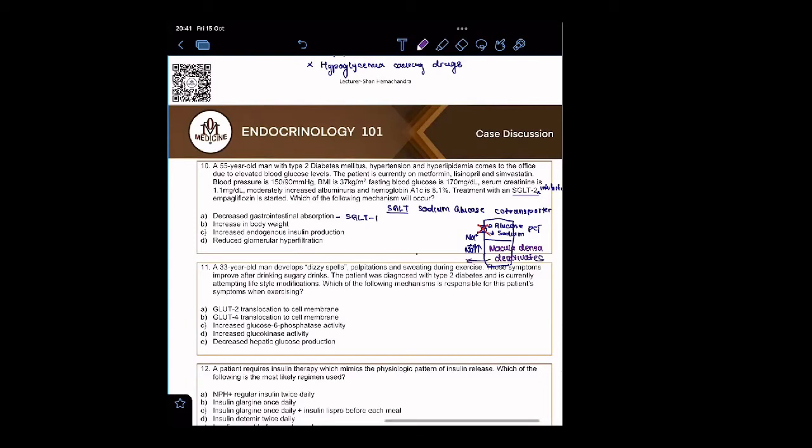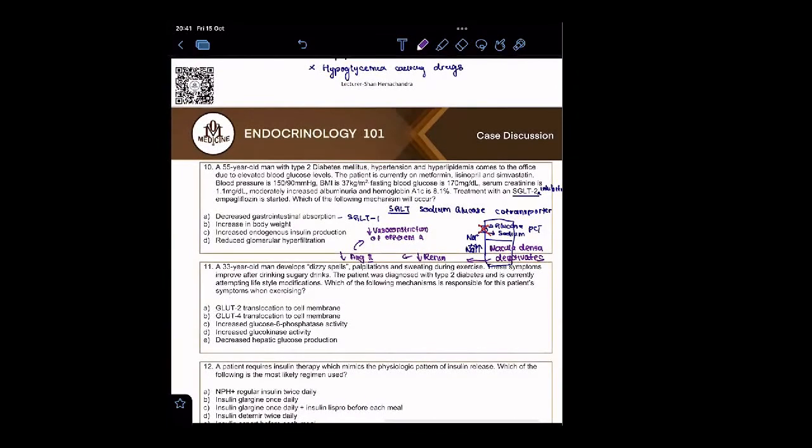So that means there's going to be low renin, low angiotensin II. And when you have low angiotensin II, this reduced vasoconstriction of efferent arterioles. And this means, let me, I'm going to draw the efferent and the afferent here.